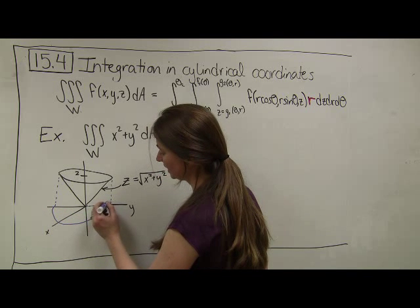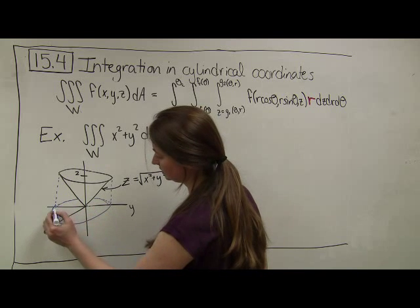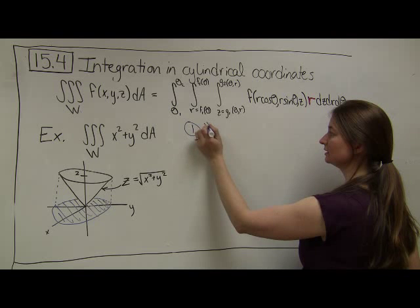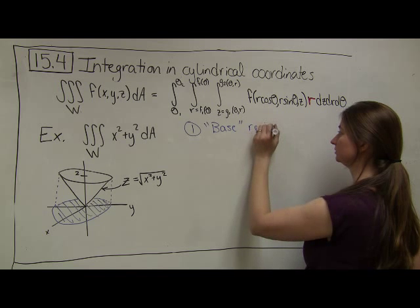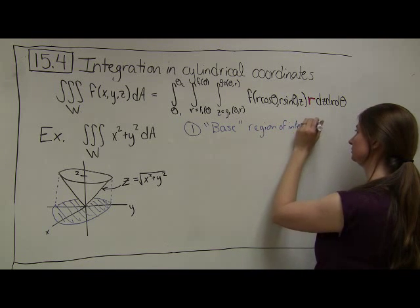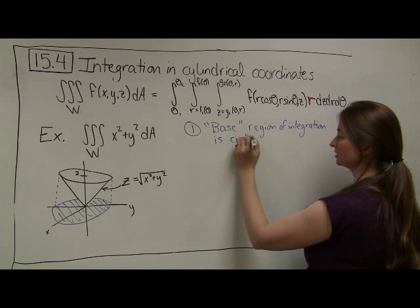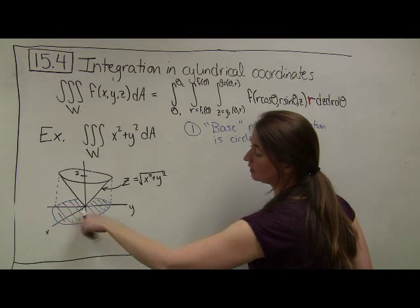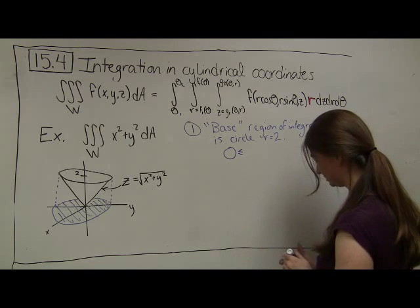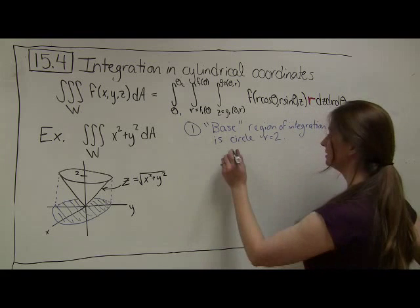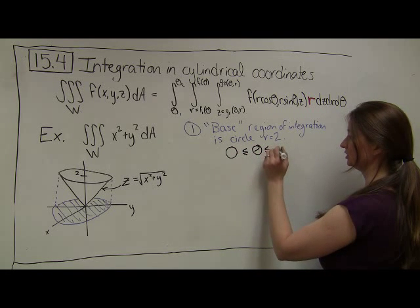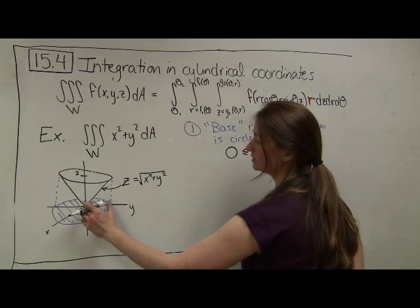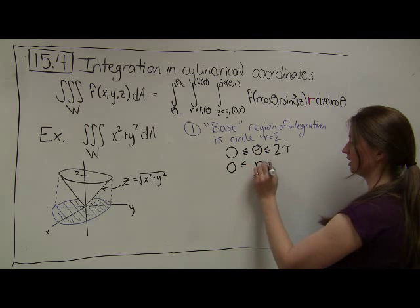When thinking about the region of integration, the shadow that my volume makes in the x, y plane is just a circle of radius 2. This is my region of integration — the base, which is the circle of radius 2 in the x, y plane. We represent that in polar coordinates: theta is sweeping out a full circle, so 0 ≤ theta ≤ 2π. We want to go in a full circle, and our radius goes from 0 all the way out to 2, so 0 ≤ r ≤ 2. Those are the bounds for the base of this region.